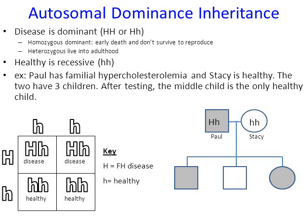Looking at the three children: the child on the left is colored in — they have the disease. The middle child is not colored in — they're healthy. The child on the right, the circle, is colored in — she has the disease. From very little information given in the story, we were able to figure out the genotype and phenotype of everyone in the family.